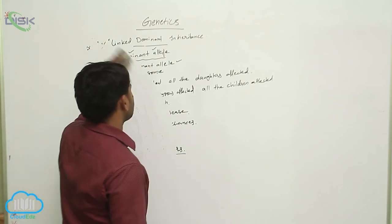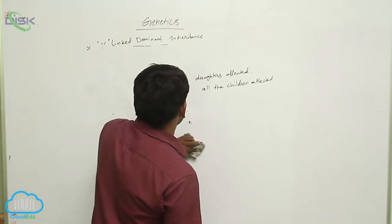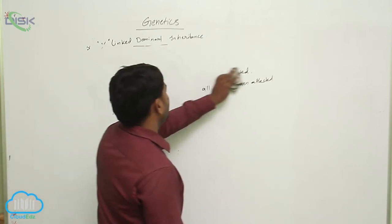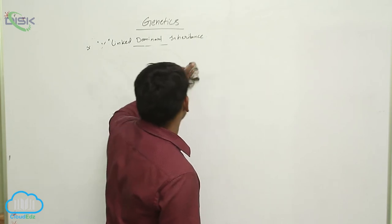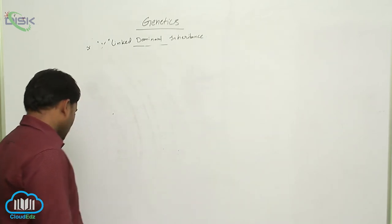Let us see some examples of X-linked dominant characters. These are uncommon and very rare diseases, not common in individuals.